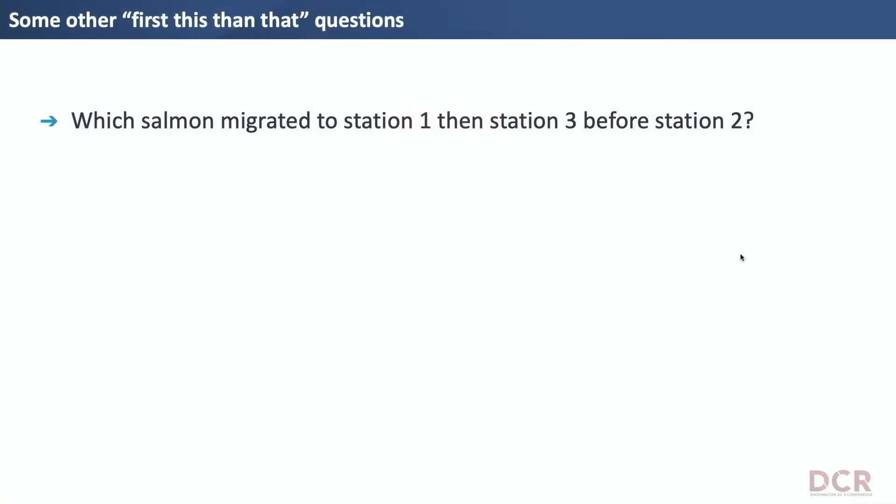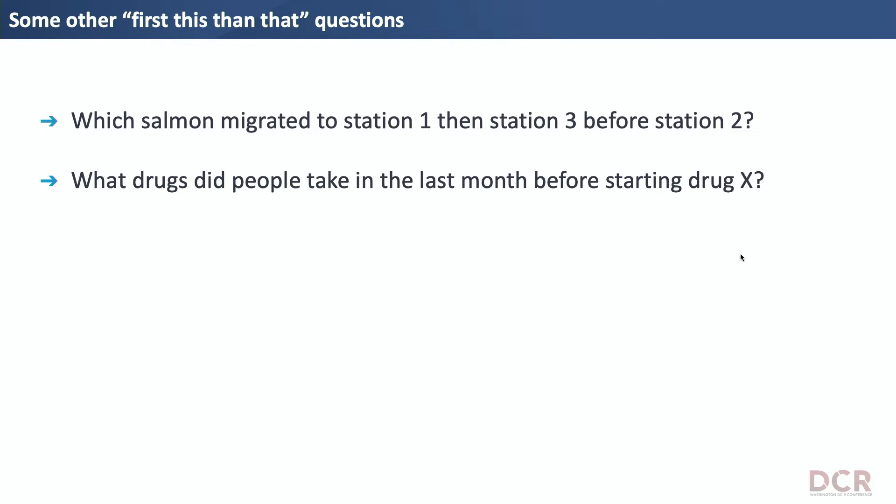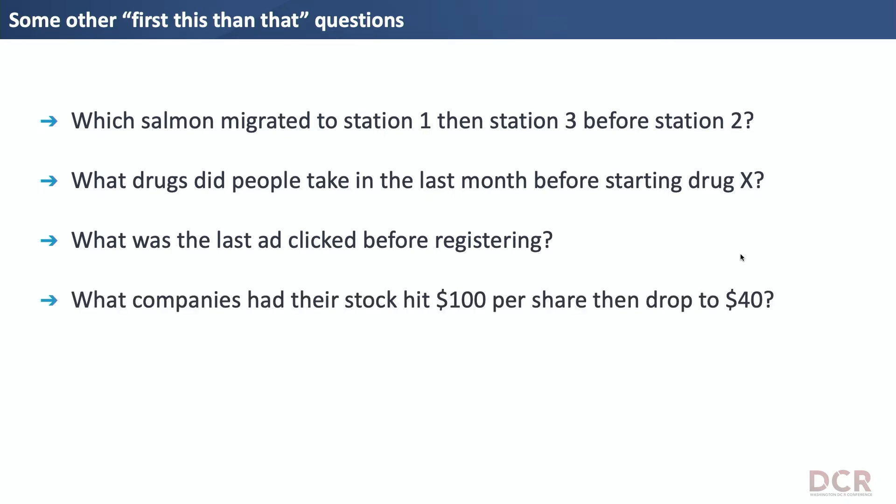But it doesn't just have to be people. What are some other questions we can ask of this kind — first this happened, then that — where we have an identifier for who did it and what the event was in time? Some interesting examples: which salmon migrated to station one, then three, then two? What drugs did people take in the last month before starting another drug? What was the last ad people clicked before they registered? Or what companies had their stocks hit 100 and then drop to 40?